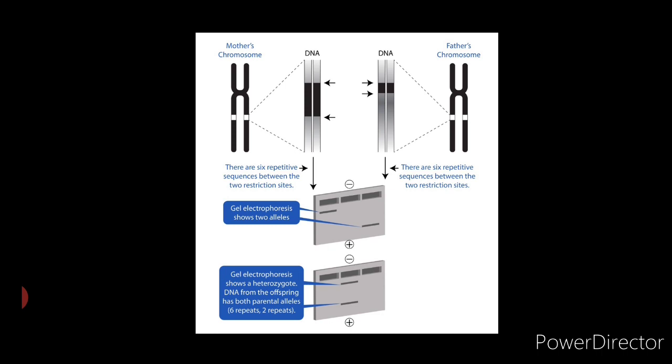Third step: southern blotting. The denatured DNA fragments are transferred from the gel to a nitrocellulose filter by capillary action. This procedure is called southern blotting.